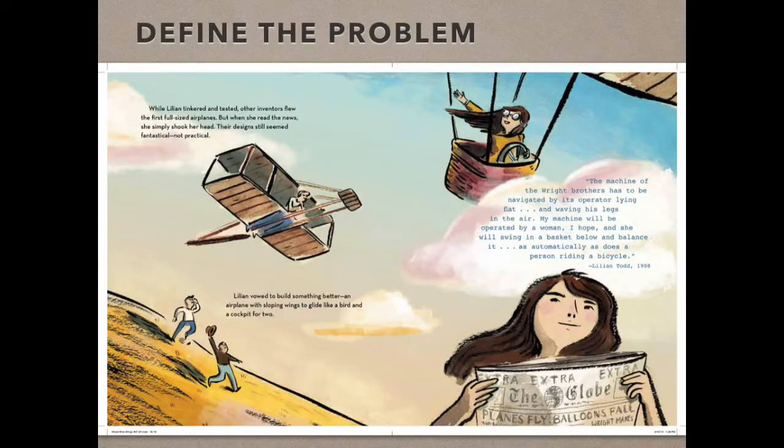So in my book, Wood Wire Wings, Lillian Todd finds her problem. She is working right after the time of the Wright brothers, when airplanes were a completely new form of transportation. So my challenge to you is to look at this slide here and read the text, and see if you can figure out the problem that Lillian Todd wanted to address.